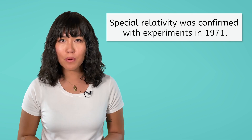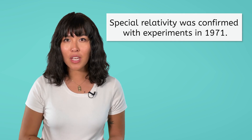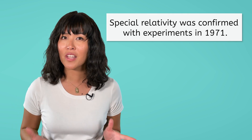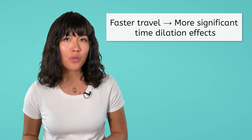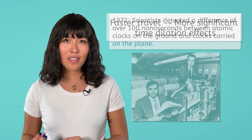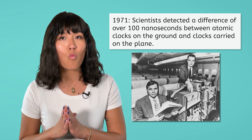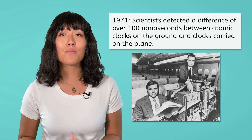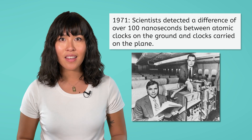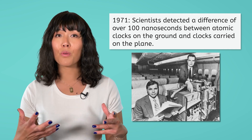How could we possibly do an experiment on a theory that requires light speed travel? It turns out that you don't have to travel at quite the speed of light to notice time dilation effects. But the faster you go, the more significant the time dilation effect becomes. Even at the speed of aircraft in existence in the 1970s, a difference of over 100 nanoseconds was measured by atomic clocks on the ground and ones carried in the plane. It tells us that our experience of time is deeply linked to our motion through space.